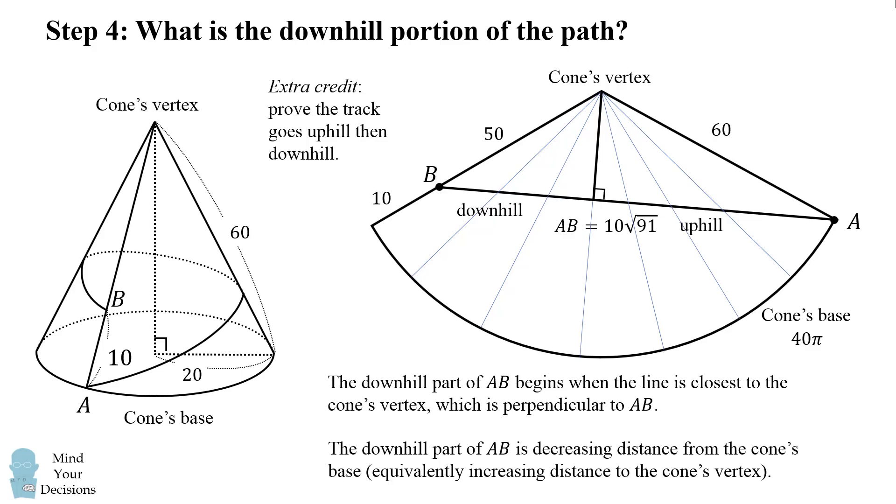Now, we are already given that the track goes from uphill to downhill and I use that information to then say we'll look for the perpendicular and this has to be the point. But to truly prove this problem for extra credit, you can prove that the track goes uphill and then downhill. And I'm sure some of you who think all these problems are easy will be able to figure this out. You know it won't be very difficult for you, but it's actually a little bit of a complicated thing to show.